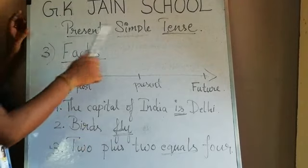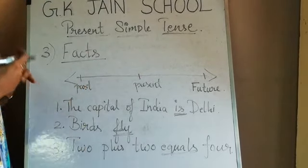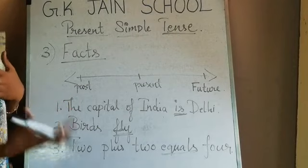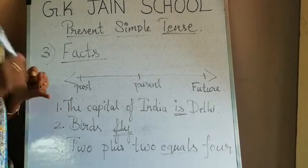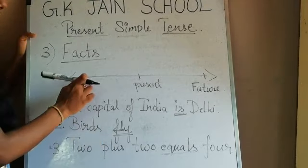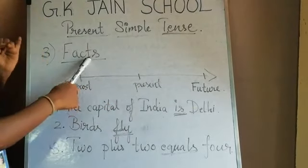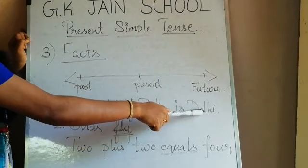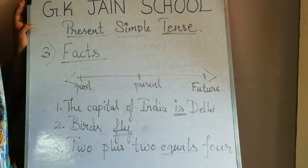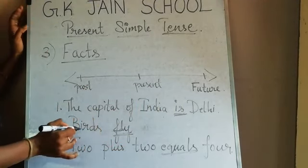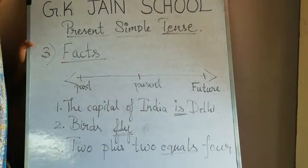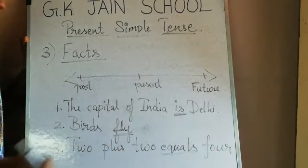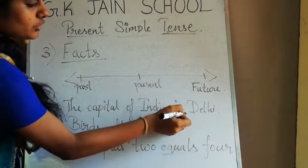The third usage of present simple tense is facts. Facts are about general knowledge — things that will not change under any condition, past, present, or future. For example: 'The capital of India is Delhi.' Also: 'Birds fly' — birds will always fly, it is a permanent and habitual thing. 'Two plus two equals four' — this will never change. It is a permanent situation.